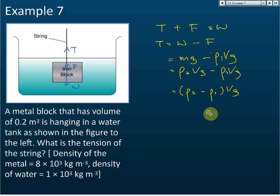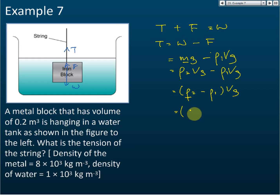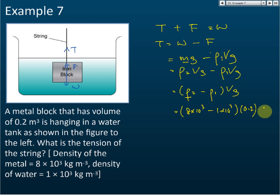After factorizing Vg, we substitute the values. ρ₂ is the density of iron for the weight of the object: 8000 kg/m³ (8×10³). We subtract ρ₁, the density of water: 1×10³ kg/m³. The volume V is 0.2 cubic meters, and g is 10. Use your calculator to compute the answer.